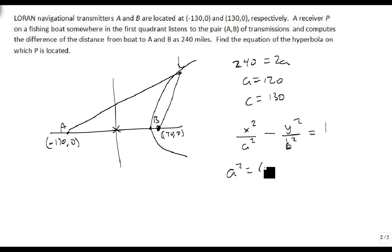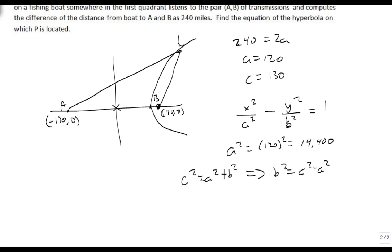And so we know that a² is equal to 120 squared, which is 14,400. And we know that c² equals a² plus b², so in this case, b² equals c² minus a².